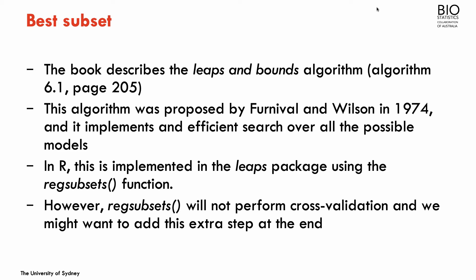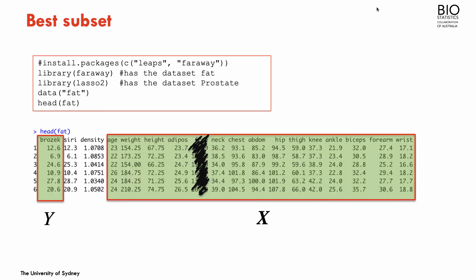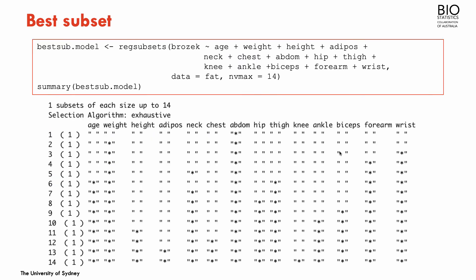However, the regsubsets function does not perform cross-validation. We might want to add this extra step at the end once we have a set of potential best models. So let me show you what this function does. So we have the data FAT, as I said, there's 252 observations. I have here the first six. And the outcome is going to be Brozac, my variable Y, and the predictors are going to be all the measurements, to the exception of siri, density, and free. So this is my matrix of the predictors.